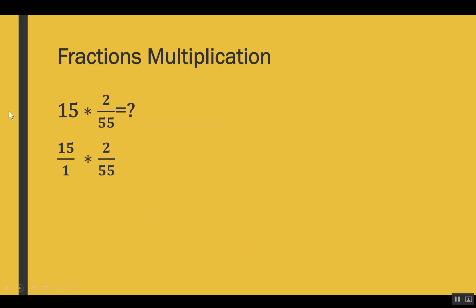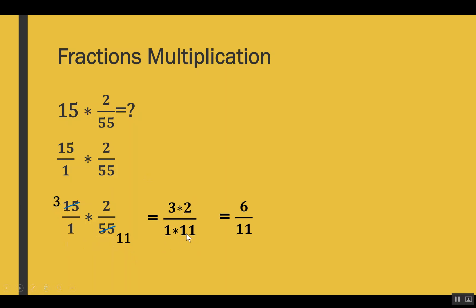So the same question can be written as 15 out of 1 multiplied by 2 out of 55. Here 15 and 55 have the common factor 5. If we cut them we get 3 in the numerator for 15 and 11 in the denominator for 55. Multiplying numerator with numerator and denominator with denominator: 3 × 2 and 1 × 11 gives us a result of 6 out of 11.